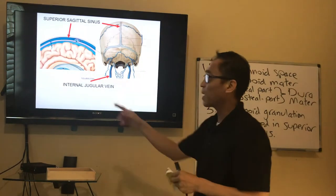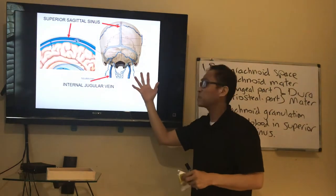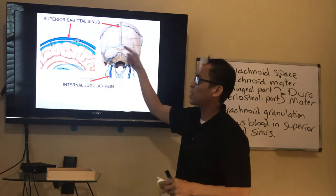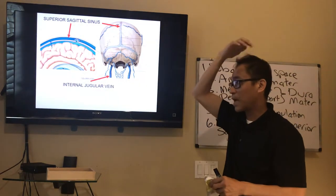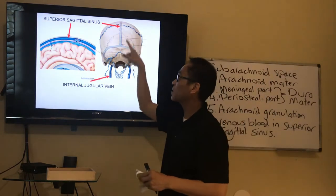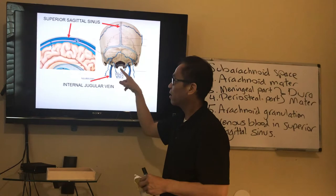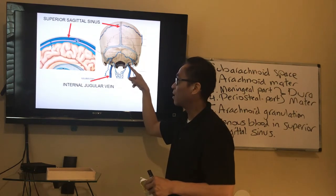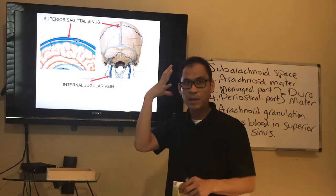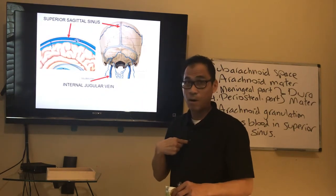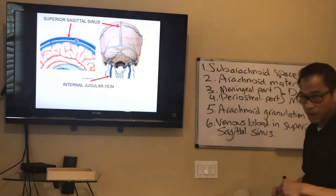Here's a picture showing the superior sagittal sinus inside the skull between the hemispheres of the brain, right in the sagittal plane. All these other sinuses drain all the venous blood down to the neck — the IJV, the internal jugular vein, exits the skull and is the main vein in the neck returning all the blood from the brain to the heart.